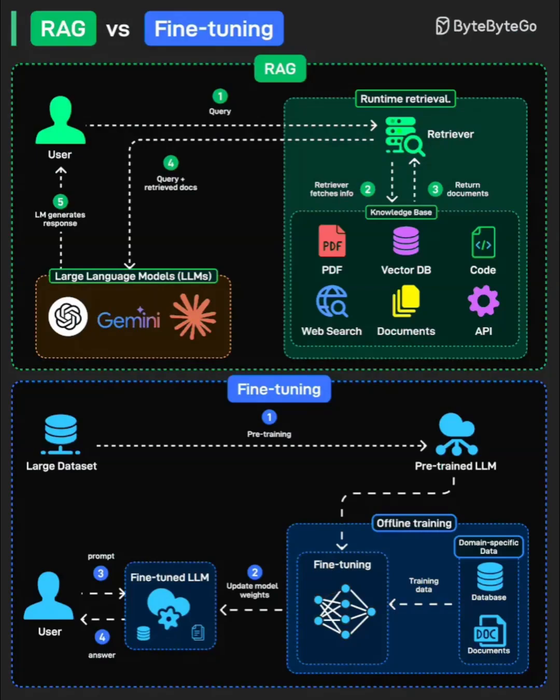It's runtime retrieval happening on the fly with every request. The beauty of RAG is flexibility — your knowledge base can be updated instantly without touching the model. You add a new document today, and the system can use it immediately.